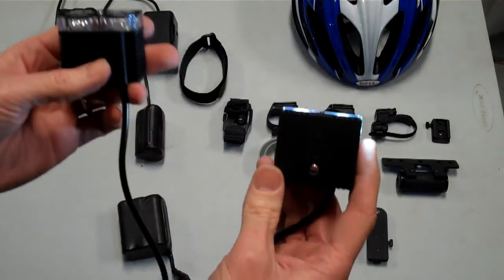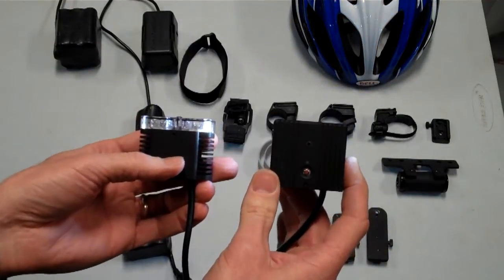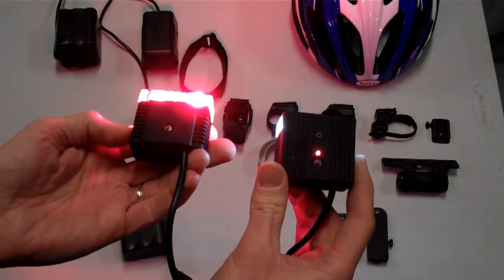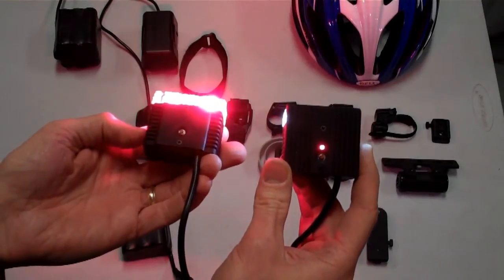So if I turn on the taillight, which is also using the same battery through the Y connector here, what you're going to notice is it's going to pull the battery down a little bit. The status light came on the headlight, indicating that now we're below 50%.